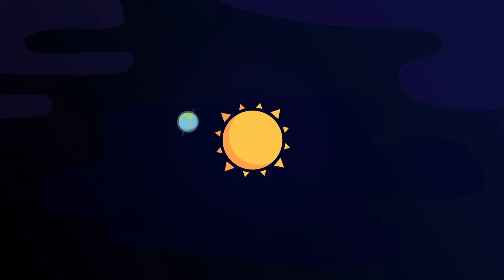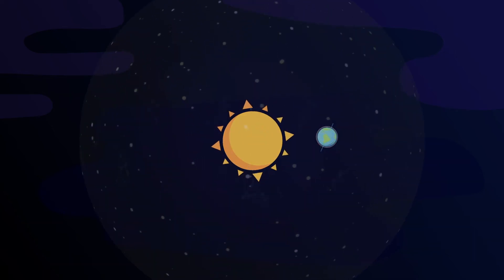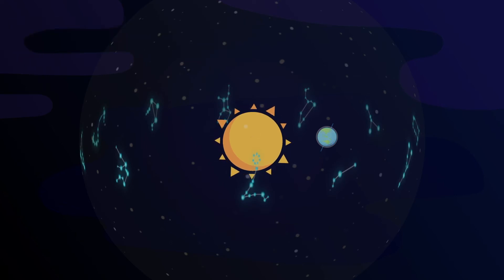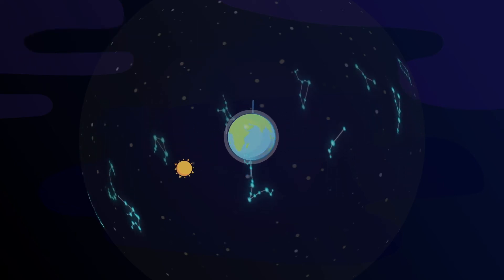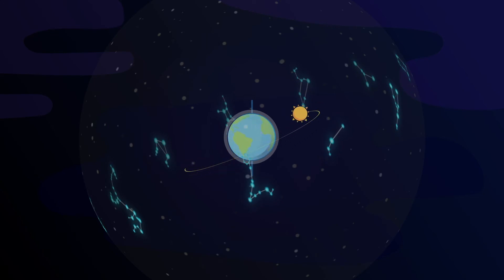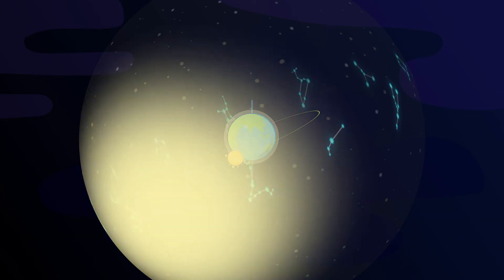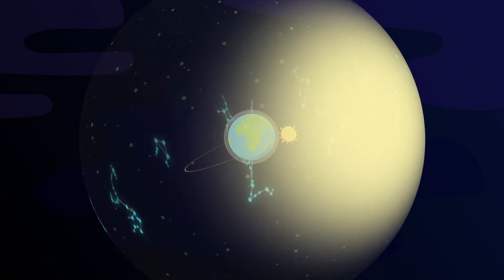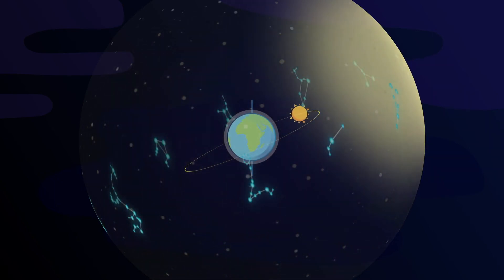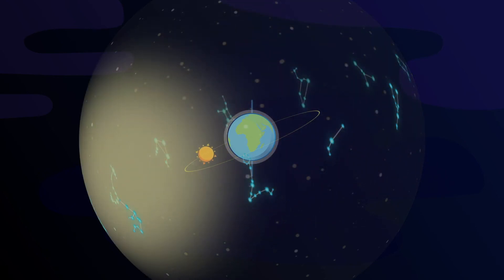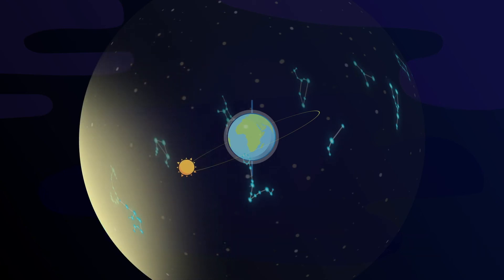Our zodiac signs are based on the date we were born. The 12 zodiac signs refer to the 12 constellations near the ecliptic. Why do we see different constellations depending on the season? Constellations in the direction of the sun are blocked from view by strong sunlight, while constellations that are in the opposite direction of the sun are in clear view. This is why the constellations change depending on the direction the Earth faces as it revolves around the sun.